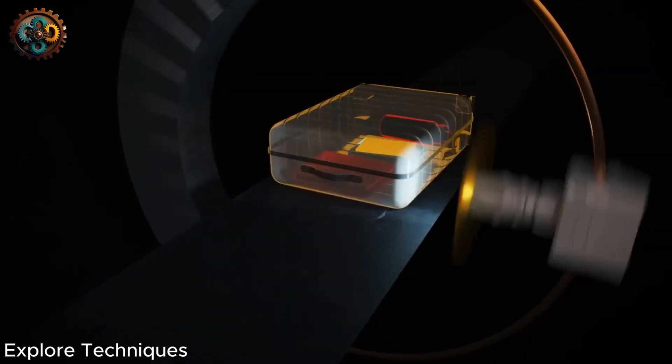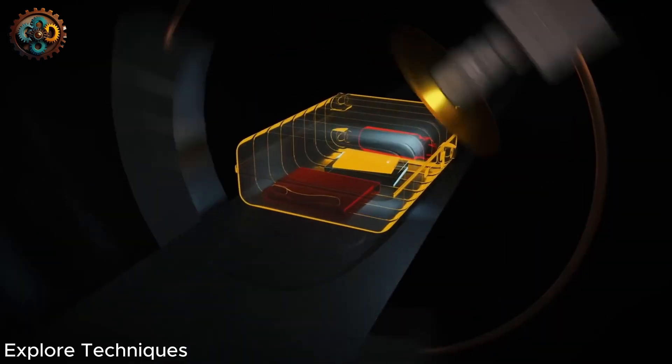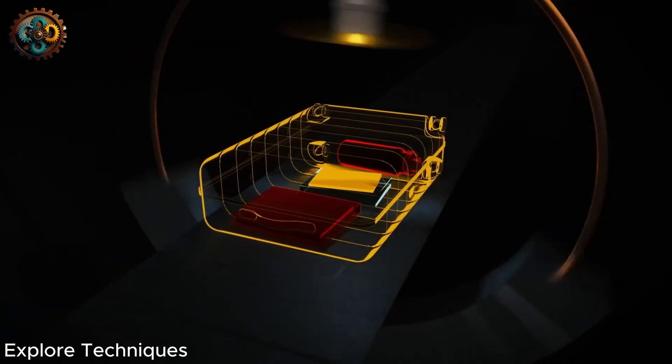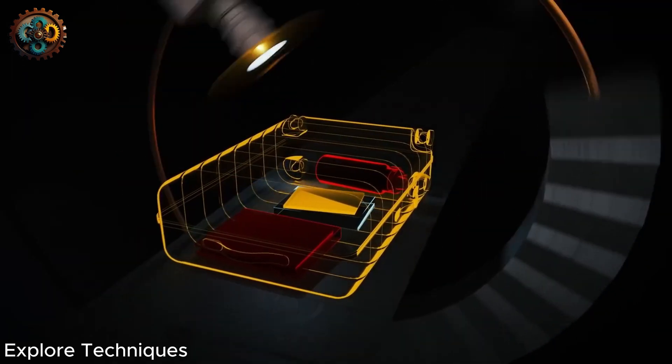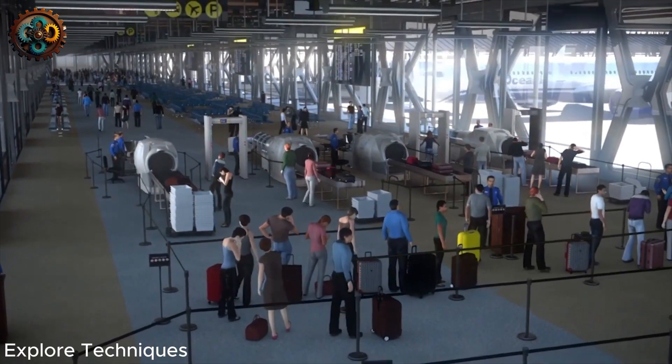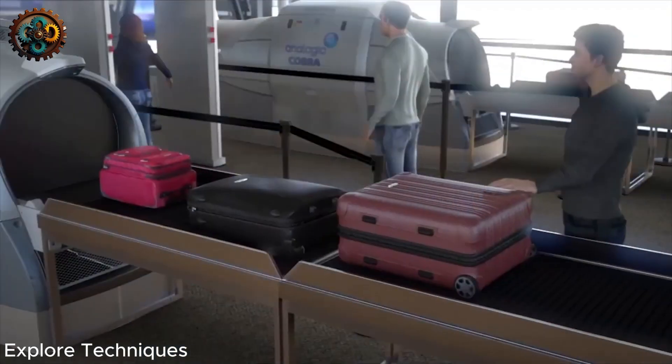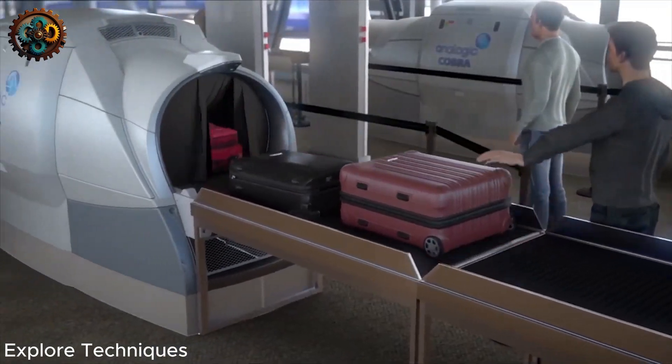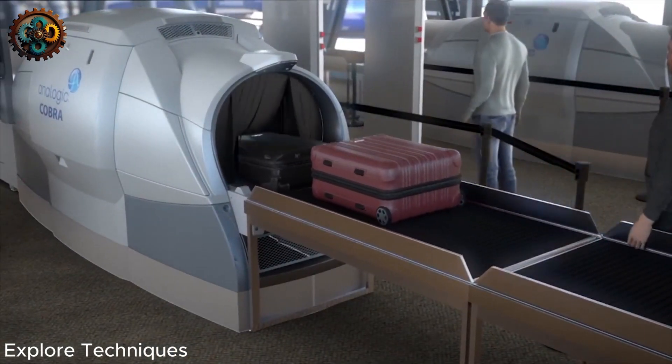The next step is to take multiple images of the bag from different angles. The scanner builds a 3D model of the items inside the bag, allowing it to know their volume. Using this data, along with the absorption data, the scanner can estimate the density of the material.